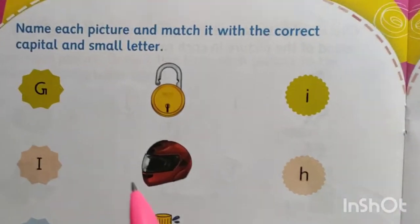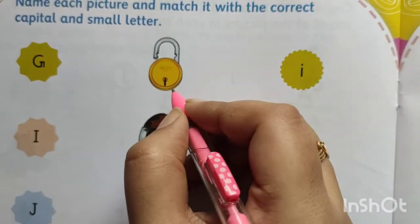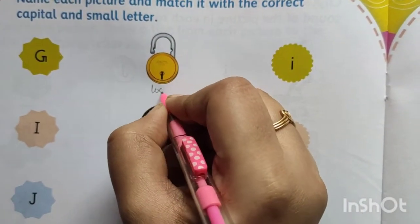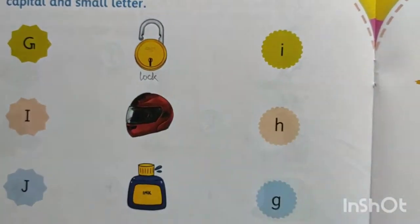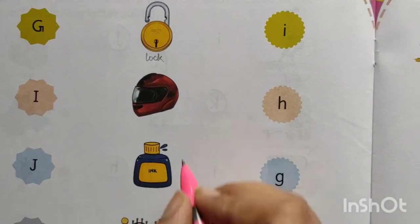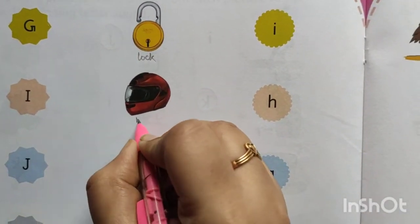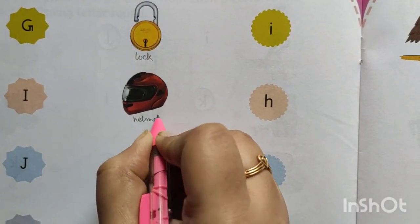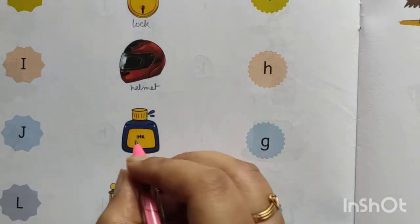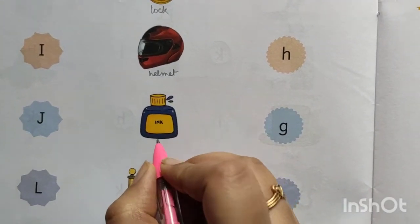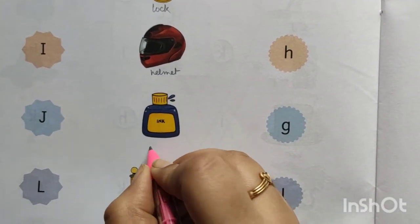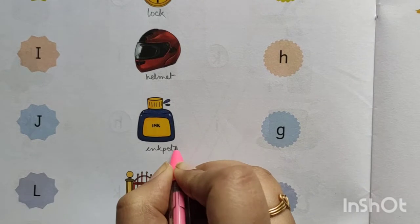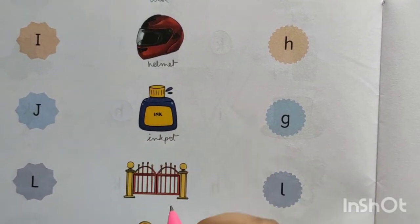So first one, this is lock — L-O-C-K, lock. This is helmet — H-E-L-M-E-T, helmet. This is ink pot — I-N-K-P-O-T, ink pot.